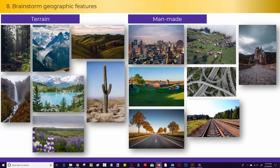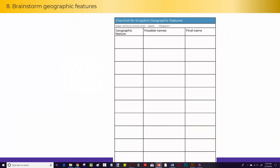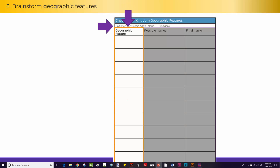So start thinking about what you want in your kingdom or on your island, and fill out the first column in the checklist for kingdom geographic features. First, decide your basic territory — will you use an island or a kingdom? Then fill out just the first column. For example, you would put: yes, I want a forest, a river, and a town.